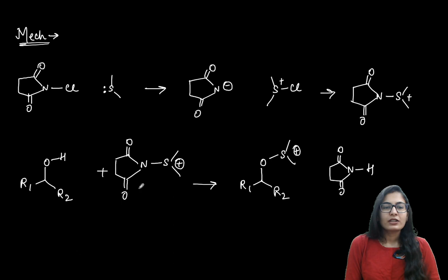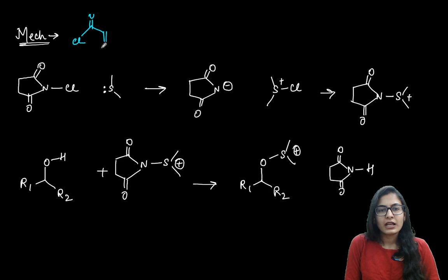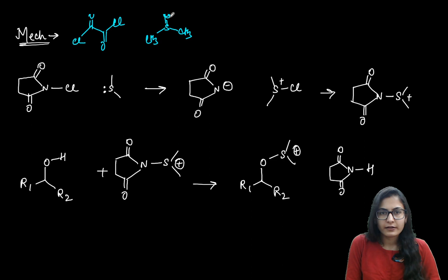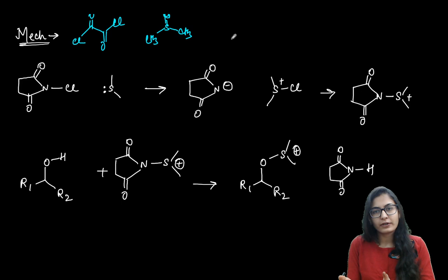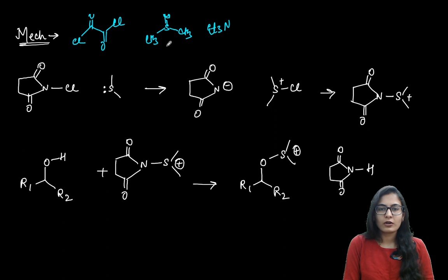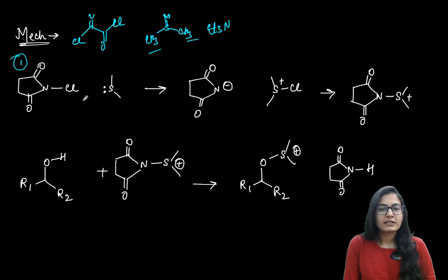If you study the Swern oxidation mechanism side by side with the Corey-Kim oxidation, it would be very easy to remember. In the Swern oxidation, oxalyl chloride and DMS were used to generate a sulfur electrophile — to make the oxygen of the alcohol attack on sulfur — and then using triethylamine a proton was removed from the carbon alpha to sulfur to give the oxidation. The same thing is done here with just a little bit of difference.